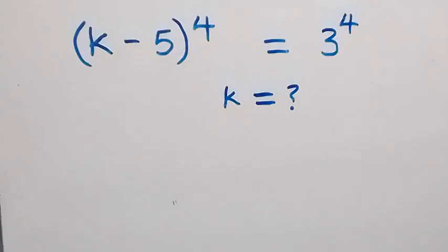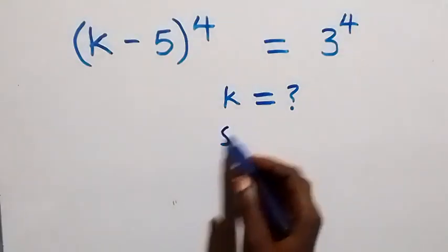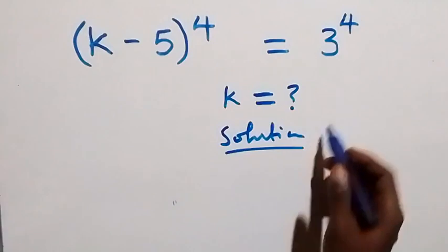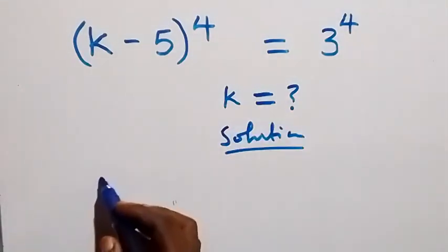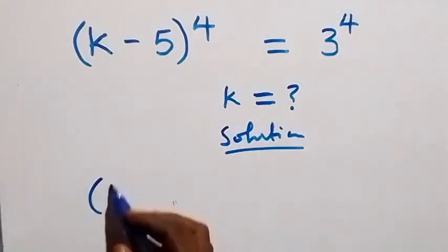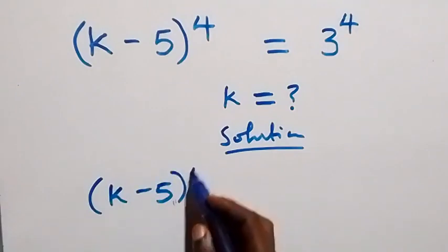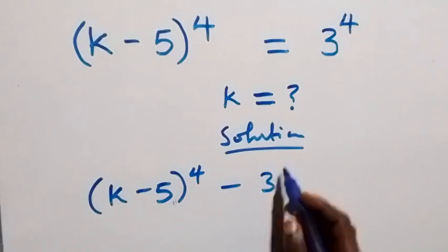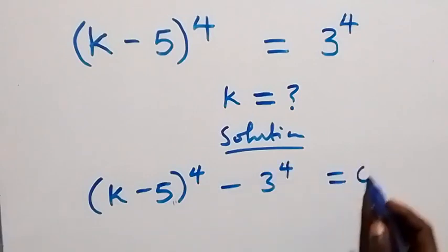Hello, you are welcome. How to solve this nice exponential equation? Solution from here. Let's take 3 raised to the power 4 to the left hand side, and this becomes k minus 5 raised to the power 4 minus 3 raised to the power 4 equals to 0.